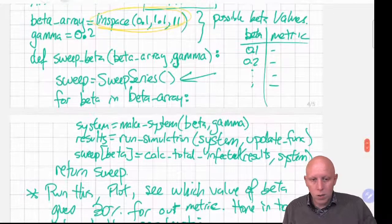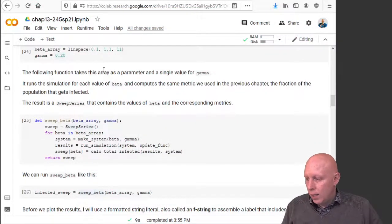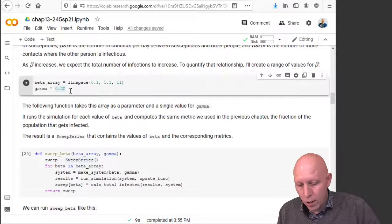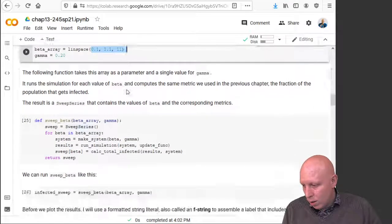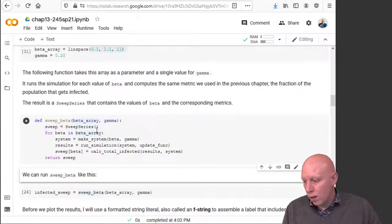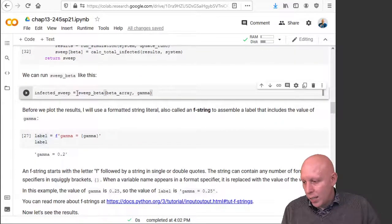All right, so let's go over and do that. So this is the chapter 13 notebook. We are running beta array, getting our list of values starting at 0.1 to 1.1. We define our sweeping of beta function that we just talked about.